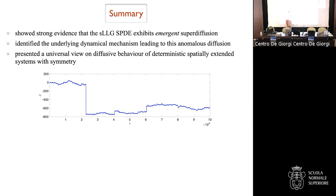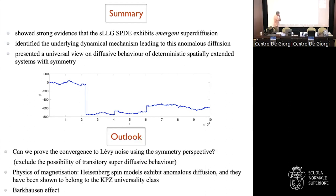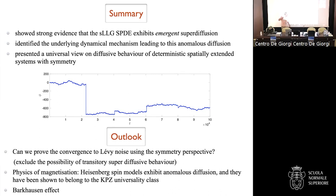As an outlook: can we prove convergence to Lévy noise? Can we use the symmetry perspective to make this rigorous? Even if the collective coordinate method is not rigorous, one cannot exclude that this is merely transitory behavior — that in the long run there is no alpha-stable noise. The microscopic model for the SLLG equation is the Heisenberg spin chain, where anomalous diffusion is known to occur.